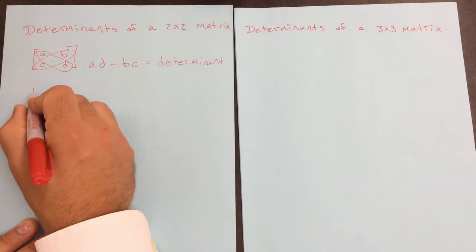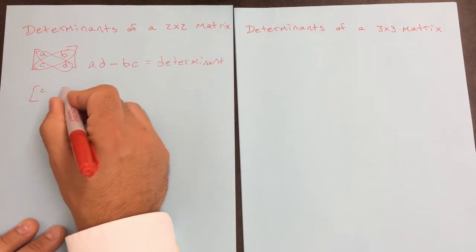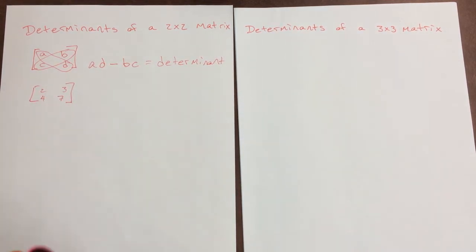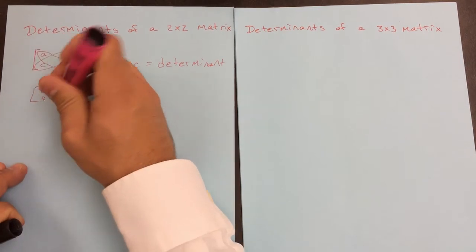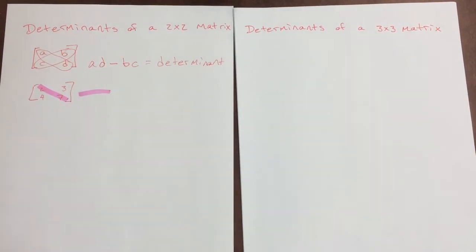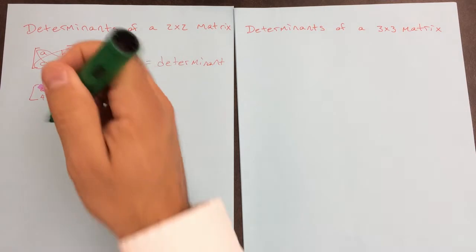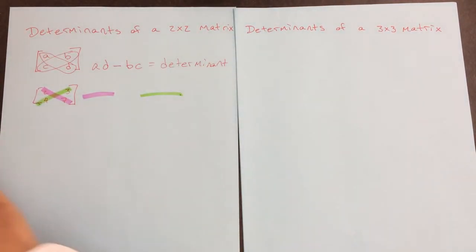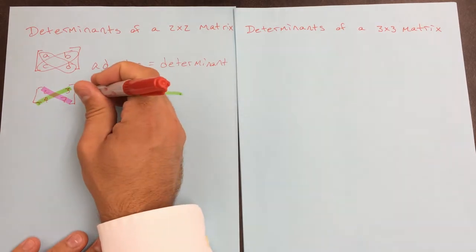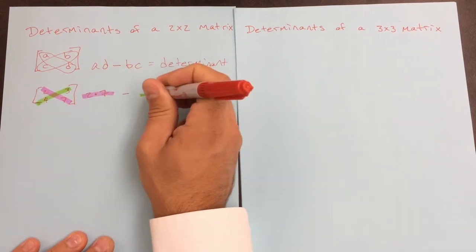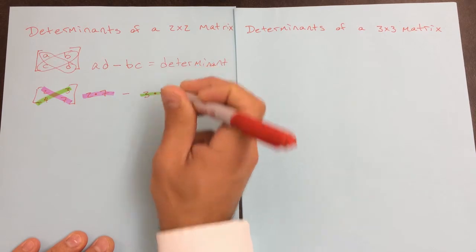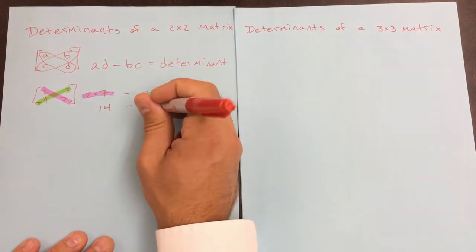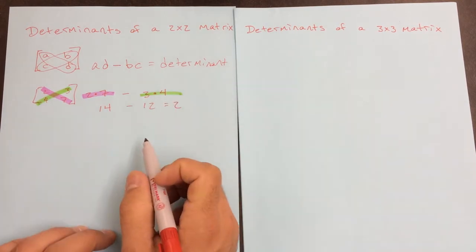I'm going to do a couple of examples here. I'm going to use some highlighters to help me see what I'm doing — these guys minus these guys. So it's going to be 2 times 7 minus 3 times 4. 2 times 7 is 14, 3 times 4 is 12, so the determinant of this matrix is 2.